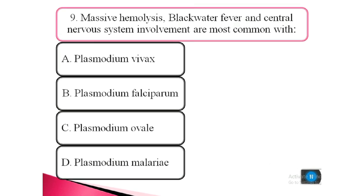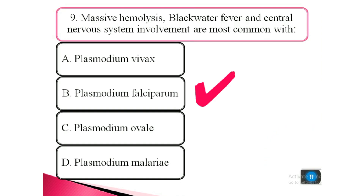Question 9. Massive hemolysis, blackwater fever, and central nervous system involvement are most likely with: a. Plasmodium vivax, b. Plasmodium falciparum, c. Plasmodium ovale, d. Plasmodium malariae. The answer is b. Plasmodium falciparum.